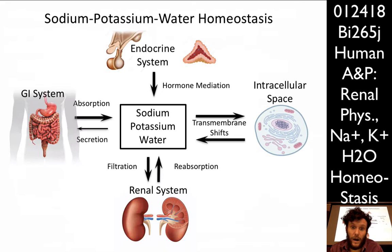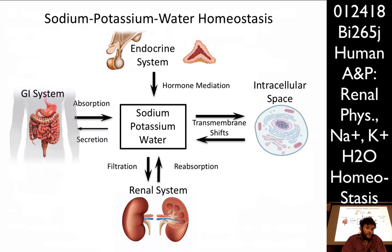There are four ways in which the homeostasis of sodium, potassium, and water can be maintained. We'll get to the renal system last and just touch on the other three first. The first is the GI system — we eat sodium and potassium and drink water, so absorption of fluid by the GI tract is an important component in the balance of sodium, potassium, and water in the body.